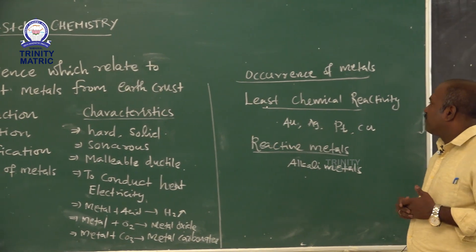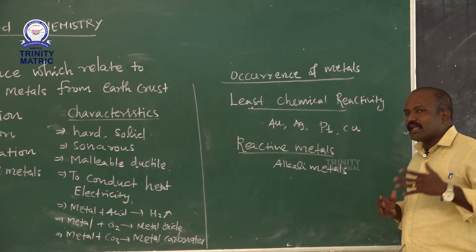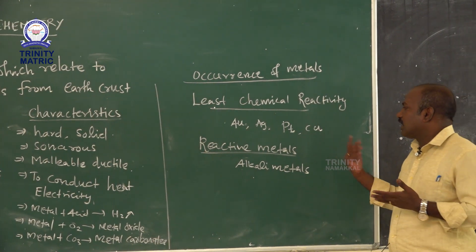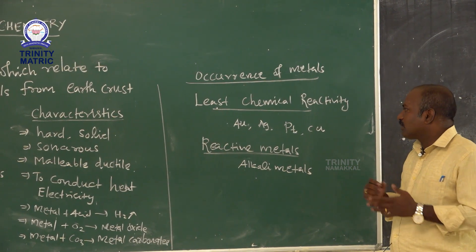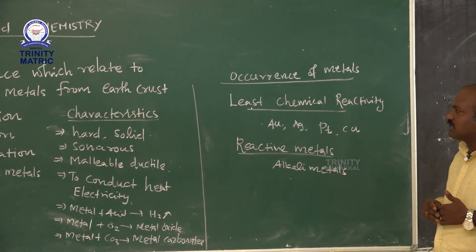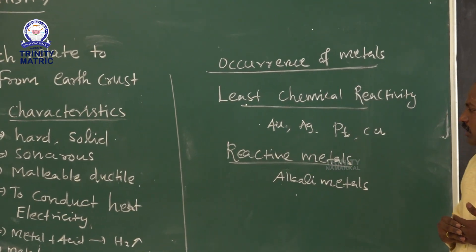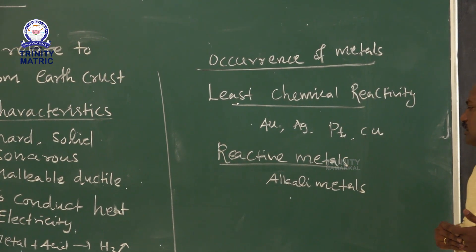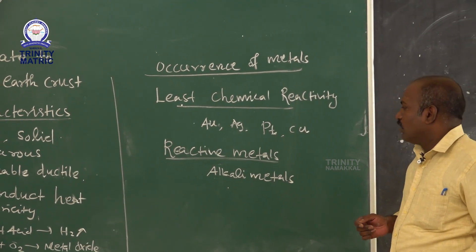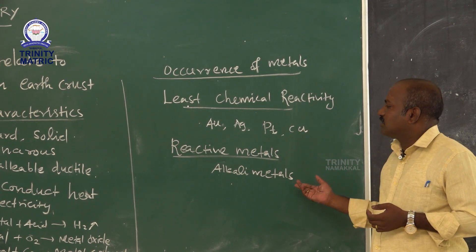Now, occurrence of metals. Metals have high reactivity nature. The least chemically reactive metals are gold, silver, platinum, and copper — these are in the middle of the periodic table. Then the most reactive metals are the alkali metals. Alkali metals are on the left side corner of the periodic table, the s-block elements — they are highly reactive in nature.